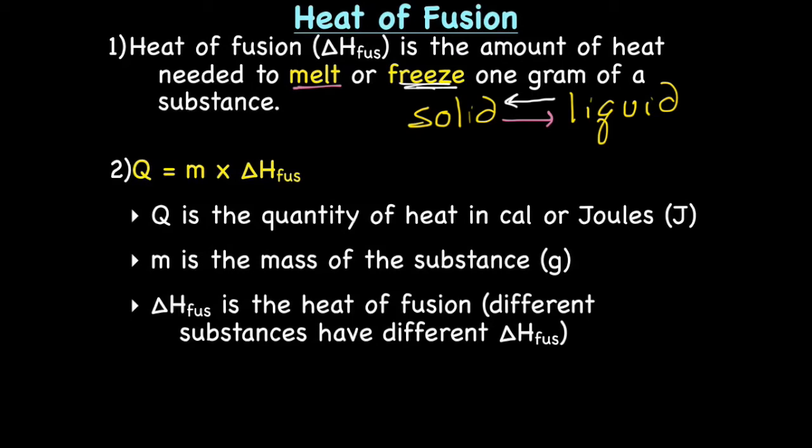For heat of fusion, there is an equation: Q = m × ΔH_fus. Q is the quantity of heat, and that will be either in calories or joules. m is the mass of the substance in grams. And ΔH_fus is the heat of fusion. Different substances have a different heat of fusion. That's a constant per a particular substance.